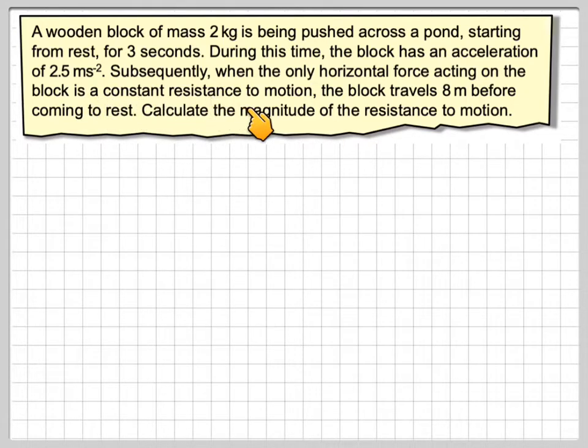Subsequently, when the only horizontal force acting on the block is a constant resistance to motion, the block travels 8 m before coming to rest. Calculate the magnitude of the resistance to motion.